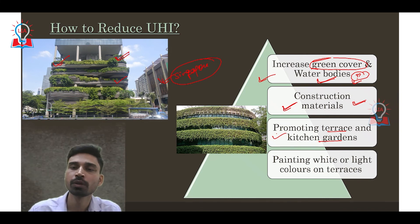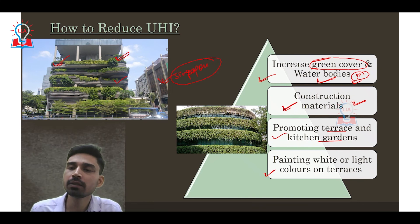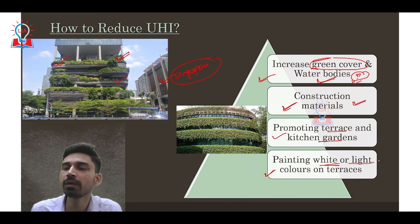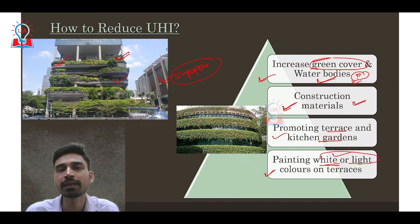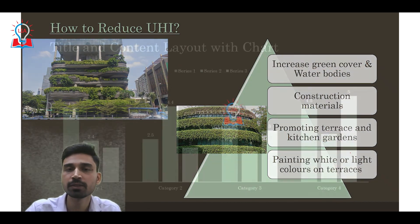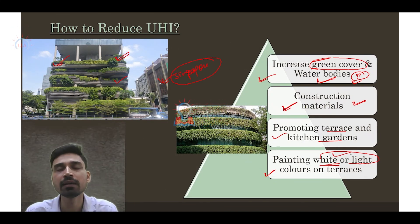Finally, we can paint the walls and surfaces of buildings in urban areas with white or light colors so they reflect more light and absorb less heat, reducing heat trapping. These are the major ways to reduce the urban heat island effect. I hope you understood the concept and how we can tackle the urban heat island effect. Thank you very much.